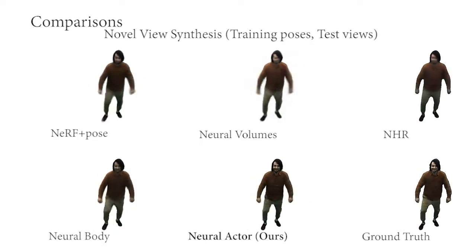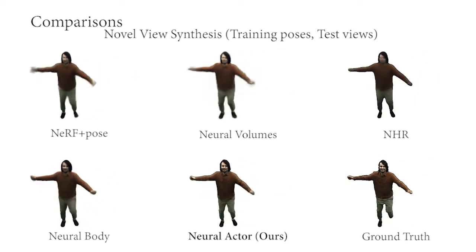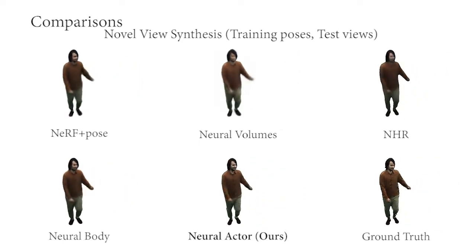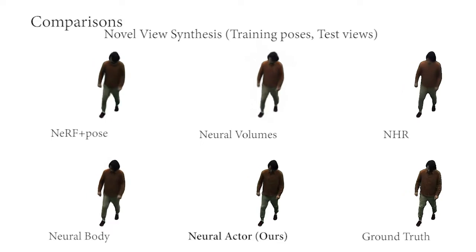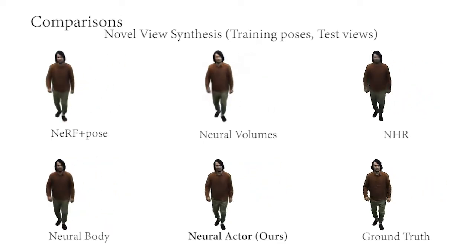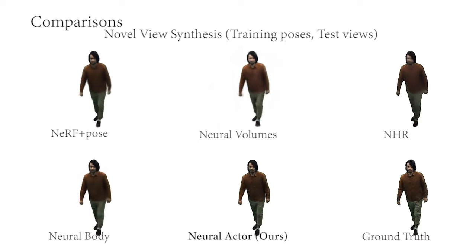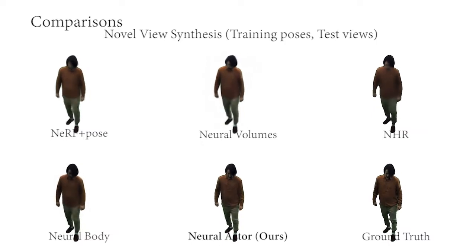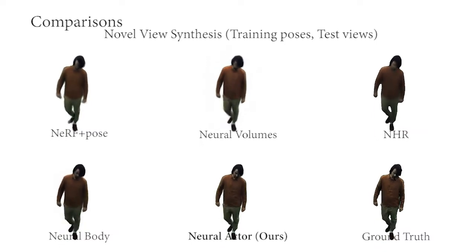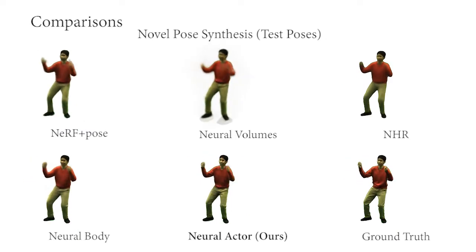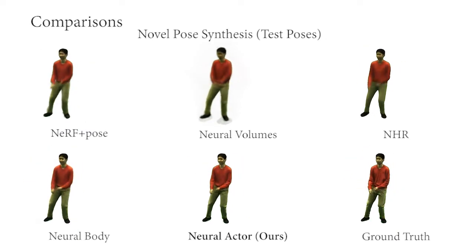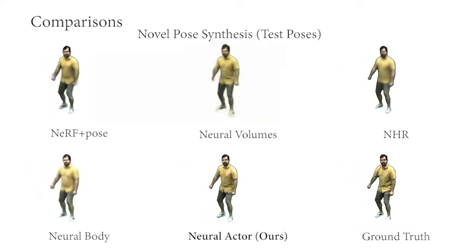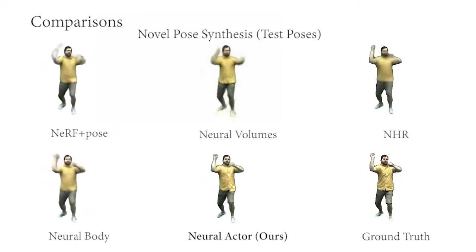We mainly compare our method with four state-of-the-art neural rendering methods on two tasks: playback and novel pose synthesis. These four methods are NeRF plus pose, neural volumes, neural body, and multi-view neural human rendering. We observe that on the playback task, these four methods produce blurry artifacts when encoding a large number of frames — 20,000 frames for example — into one network. Furthermore, these four baseline methods are not able to generalize to new poses. Their results are blurry and often have missing body parts, while our results have detailed wrinkles and dynamic appearance which are close to the ground truth.